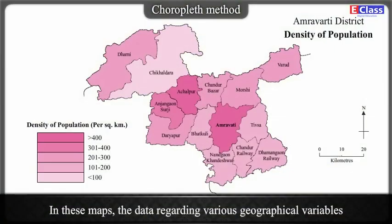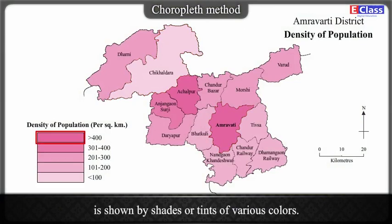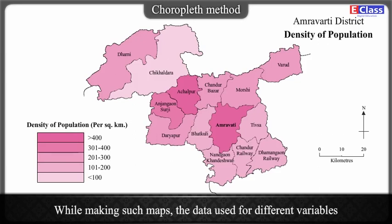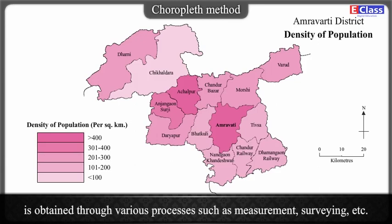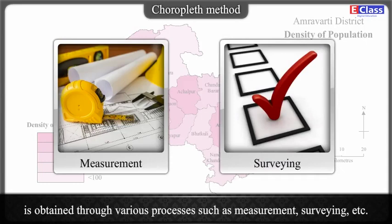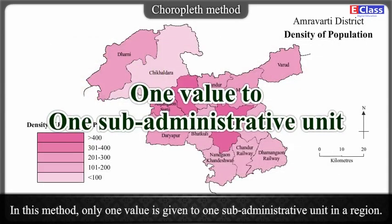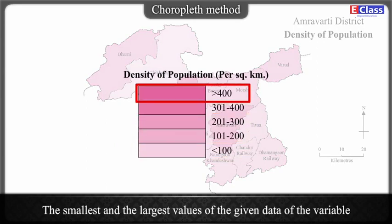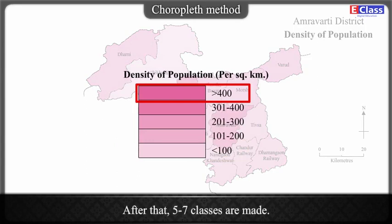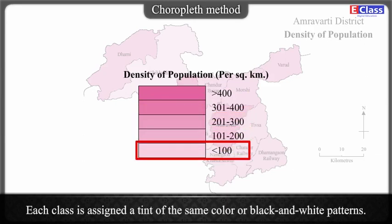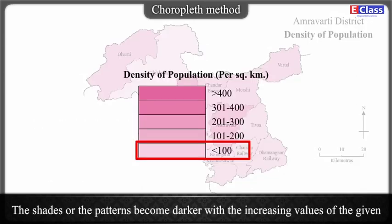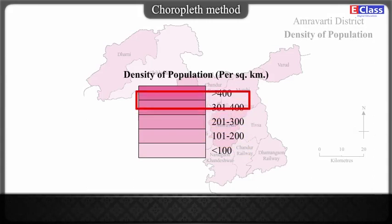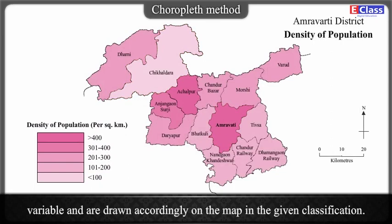Choropleth Method: In these maps, the data regarding various geographical variables is shown by shades or tints of various colors. While making such maps, the data used for different variables is obtained through various processes such as measurement, surveying, etc. In this method, only one value is given to one sub-administrative unit in a region. The smallest and the largest values of the given data are taken into consideration. After that, 5 to 7 classes are made. Each class is assigned a tint of the same color or black and white patterns. The shades or patterns become darker with increasing values of the given variable.